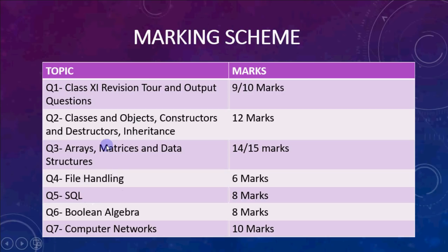Then comes SQL: 8 marks for theory questions and 6 marks for queries where you find the output. Boolean algebra comes for 8 marks — the K-map question will definitely appear, and you may also get a circuit to derive an expression, simplify a boolean expression, or write POS or SOP canonical forms.